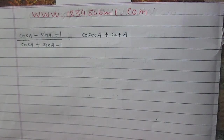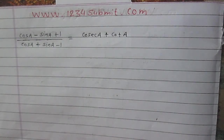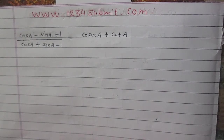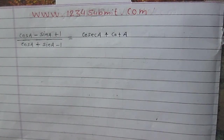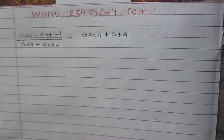In this question, we will divide the numerator and denominator both of the left hand side by either cosA or sinA. To decide which one — cosA or sinA — we will observe the right hand side to find the answer.